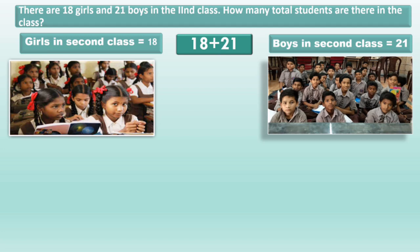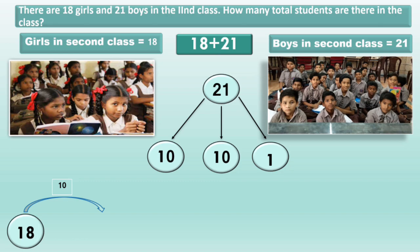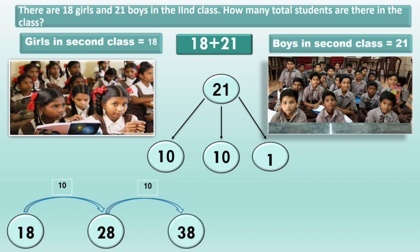Here again, we will split the number 21 into three parts: 10, 10 and 1. 10 and 10 make 20, so 10 plus 10 is 20. 20 plus 1 makes 21. Let's add now. 18 plus 10 will give 28. 28 and 10 more will give 38. 38 plus 1 is equal to 39.